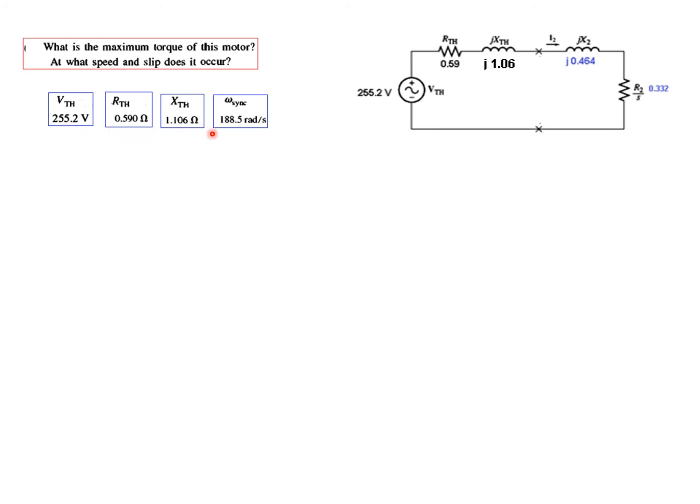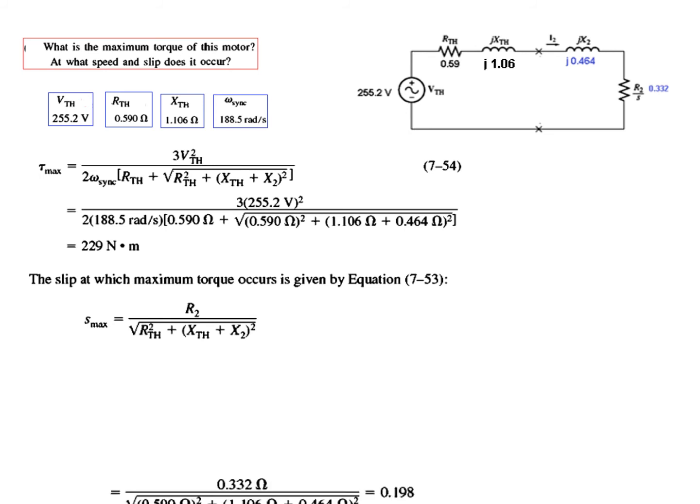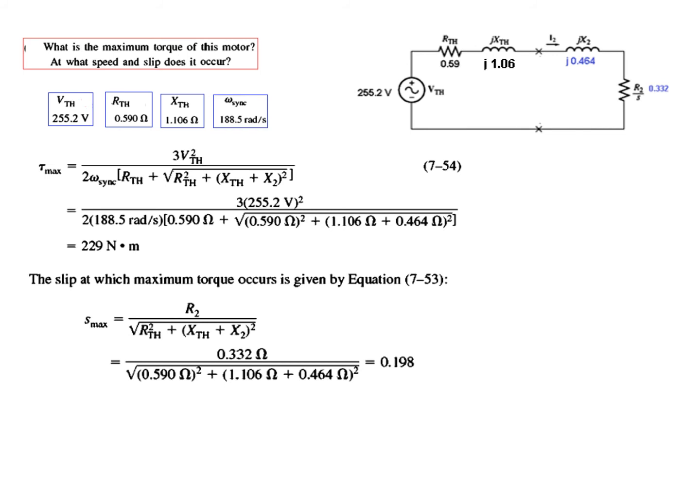Now we've found all these four terms. Let's use the formula for T_max and plug in all the values. T_max is 229 newton-meters. The slip maximum is 0.198. And the mechanical speed is 1 minus s times n_sync. We know all the values, so the rotor speed is 1444 revolutions per minute.